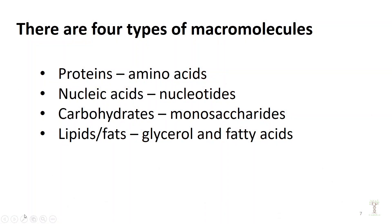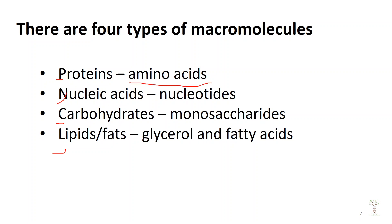Now let's talk about how we put together macromolecules and break them apart. There are four types: proteins, nucleic acids, carbohydrates, and fats. They are all made of building blocks: proteins from amino acids, nucleic acids from nucleotides (making DNA and RNA), carbohydrates from monosaccharides (simple sugars), and lipids from glycerol and fatty acids.